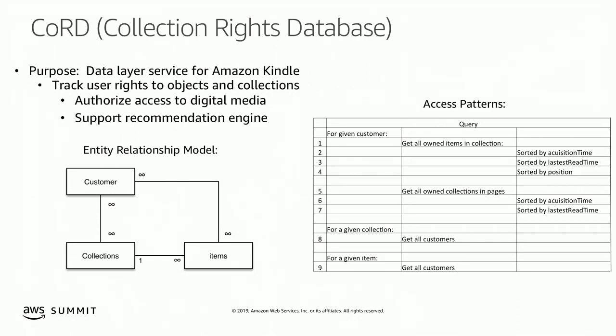The access patterns are fairly straightforward. For a given customer, we want to get all the owned items for a given collection, sorted in a couple of dimensions. One is by acquisition time — we want to know the most recently purchased item across all collections, perhaps to fill a recommendation. Another is by latest read time — when the customer last touched an item within a collection. We also want items sorted by position within a collection, since a series might have volume one, two, three.